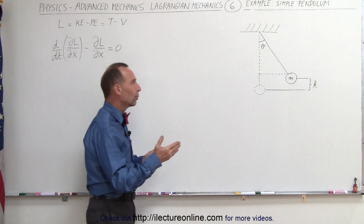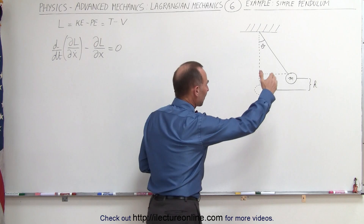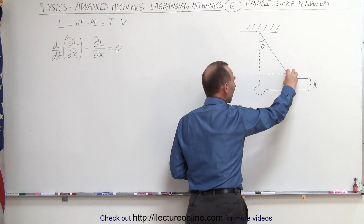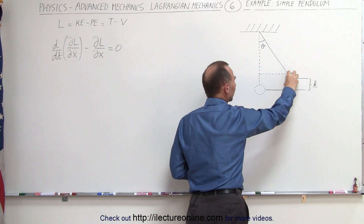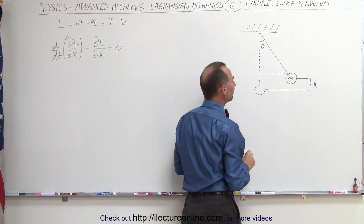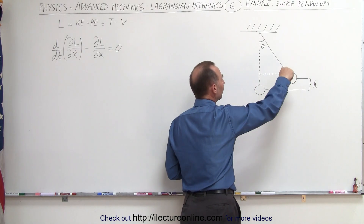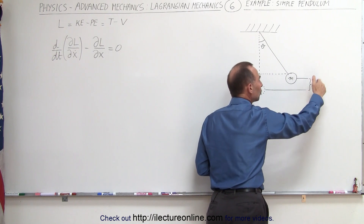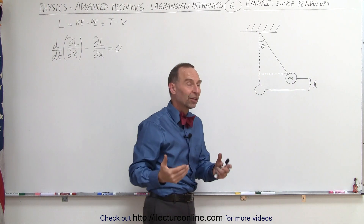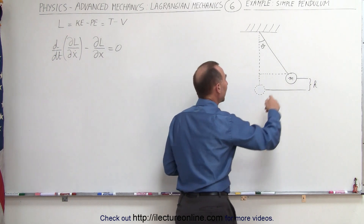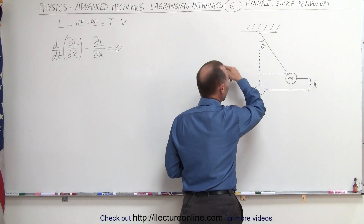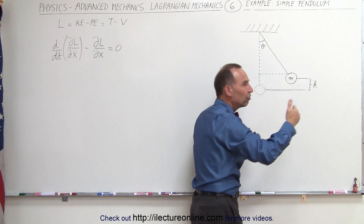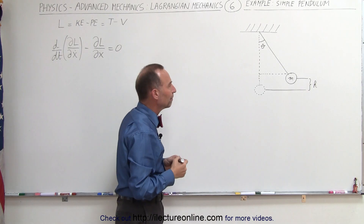What we need to realize here is that we have a simple pendulum, meaning there is no mass in the string. All the mass is concentrated at the point mass at the bottom. Notice as it swings back and forth, it will gain a certain amount of height — this is the height gain — which translates into potential energy gained by the pendulum. As it swings back and forth, it gains and loses speed, interchanging between potential and kinetic energy.